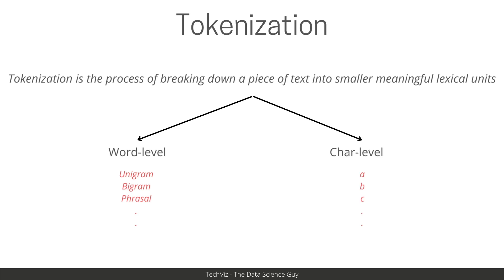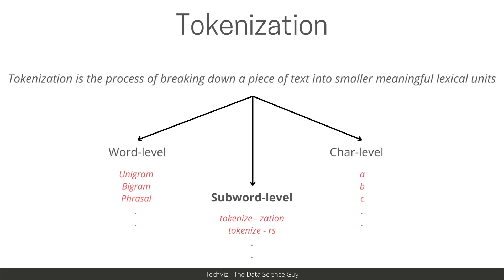The second popular approach is character level, where you represent every character in the language as a lexical unit in your vocabulary. This solves the problem of dealing with unknown words, because every word can be broken down at character level and mixed and matched to form new versions. However, the disadvantage is that a single character itself might not be very meaningful on its own.